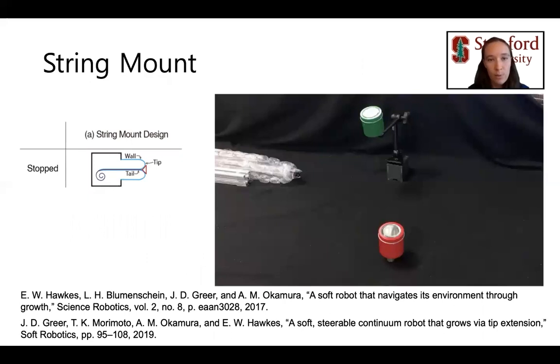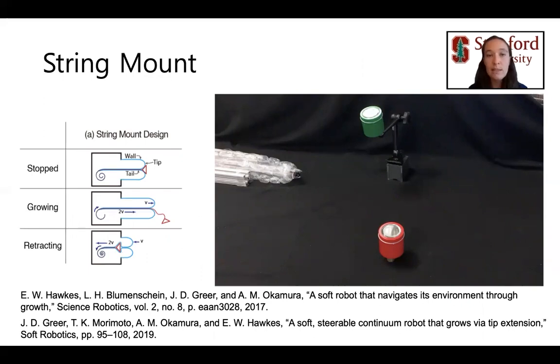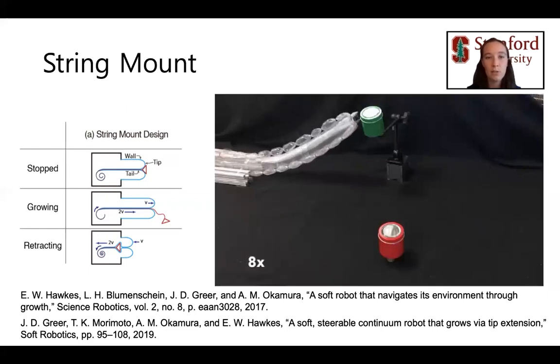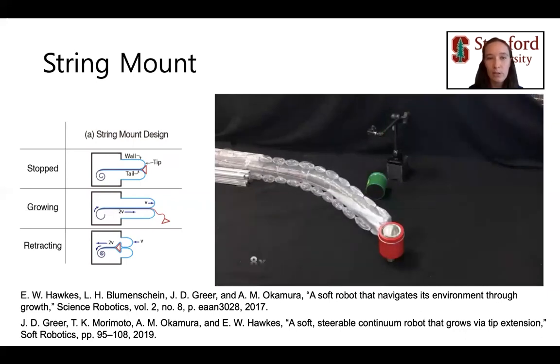First, the string mount design places a string attached to the mount inside the robot tail. However, because the robot tail moves twice as fast as the robot tip, the mount does not remain at the tip during growth or retraction. This can be overcome by storing the robot straight rather than on a spool and pulling back the string from the base during growth. However, because there's a limit on the amount of material that can be stored straight, this design does not allow growth to arbitrary lengths.